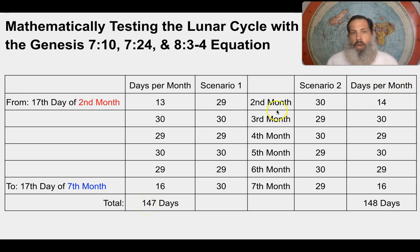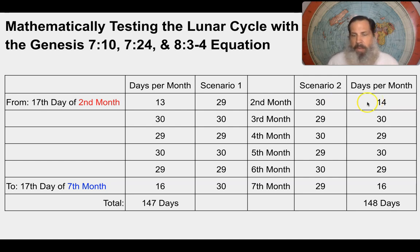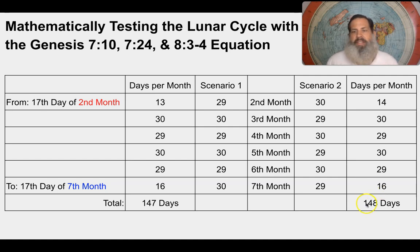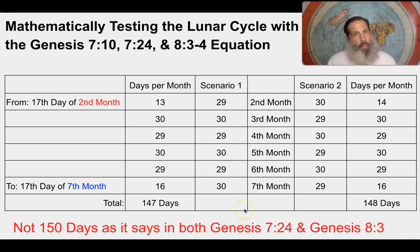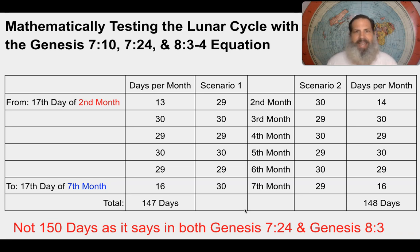In scenario two, because there are 30 days in month two, you get one more day. Starting on the 17th day including the 30th day of the second month, you count 14, then 30, 29, 30, 29, and 16 days — again bringing you to the 17th of the seventh month. That totals 148 days — not 150 days as stated twice in both Genesis 7:24 and Genesis 8:3.